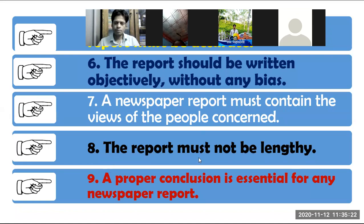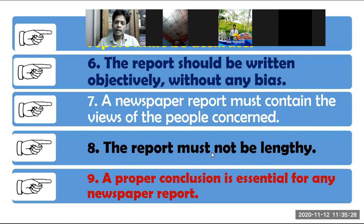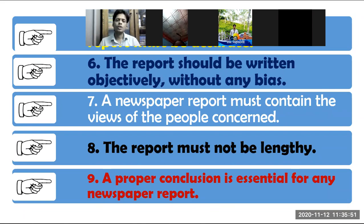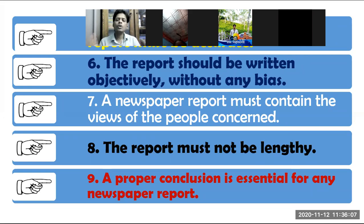Number eight: the report must not be lengthy. Number nine: a proper conclusion is essential for any newspaper report. For example, if you have written about an accident — what happened, what the doctor said, whether the victim was injured, what the police did, whether the driver was arrested — that is the conclusion.